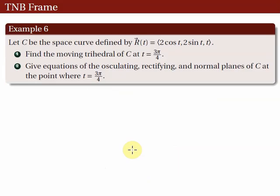Example 6: Let C be the space curve defined by R(t) = (2cos t, 2sin t, t). Find the moving trihedra of C at t = 3π/4. Then give equations of the osculating, rectifying, and normal planes of C at the point where t = 3π/4. For part 1, we are looking for the unit tangent, unit normal, and unit binormal vectors.